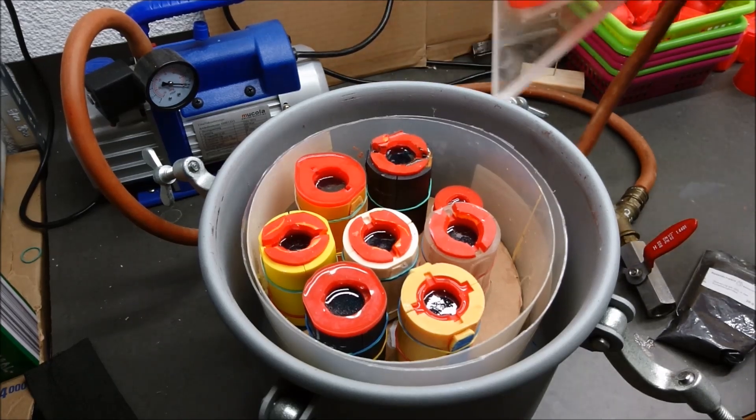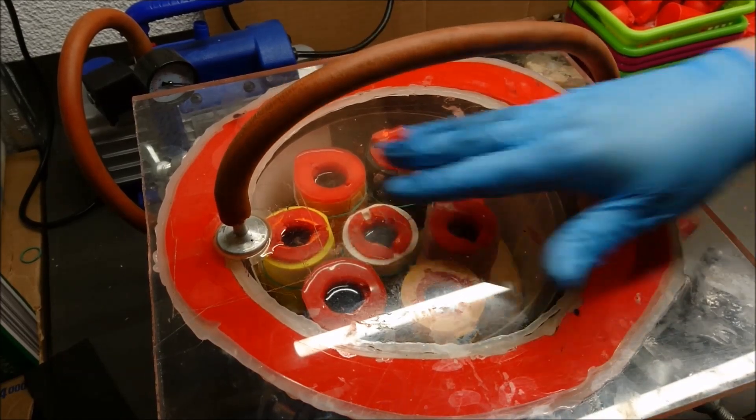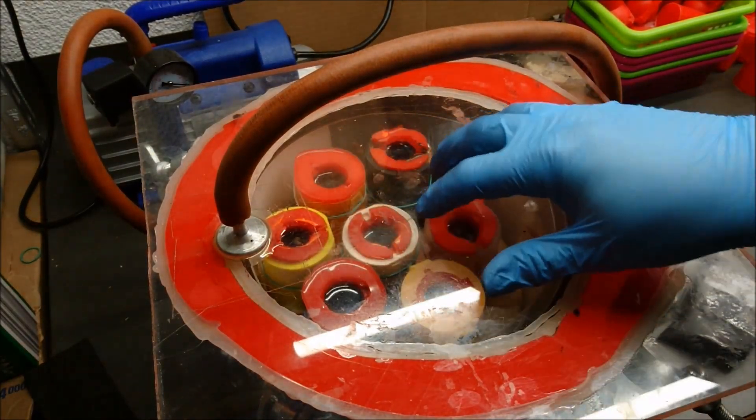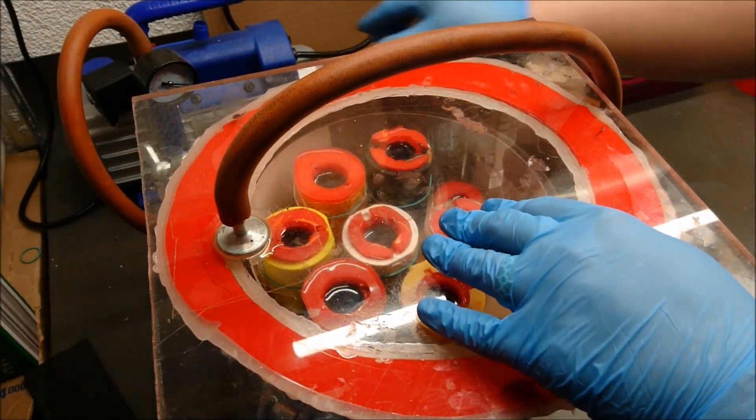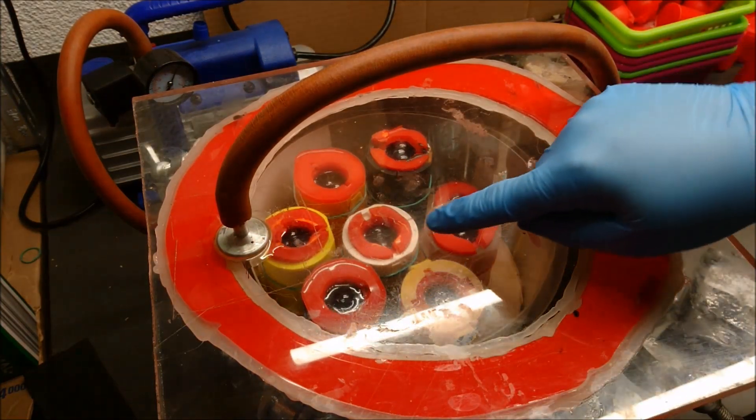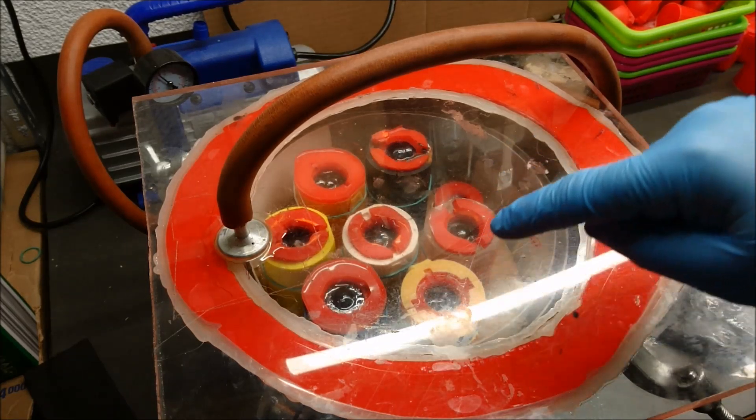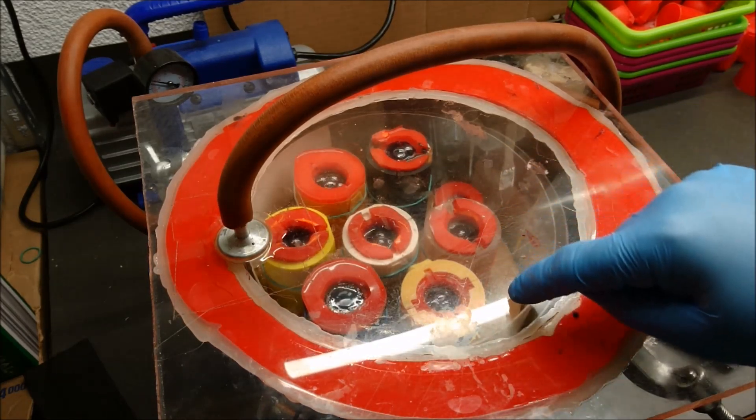So now we need to fill our mold. We use the vacuum chamber, put on the lid. I think you can see that, and we start sucking out the air. You can now see how the bubbles start to rise. This is the air that is trapped inside our mold.